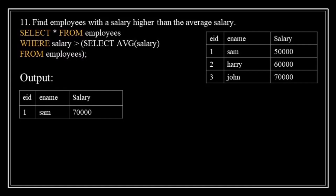Find employees with a salary higher than the average salary. The query is: SELECT * FROM employee WHERE salary > (SELECT AVG(salary) FROM employee). 'SELECT *' selects all columns; the subquery calculates the average salary of all employees, and the outer query filters results to include only those employees whose salary is greater than that average. In this example the average is 60,000, so the result includes employees earning 70,000.